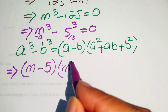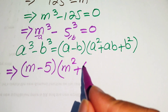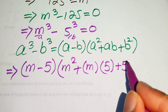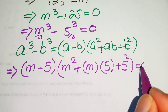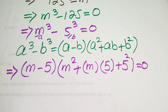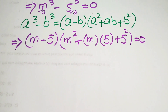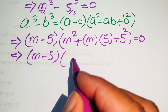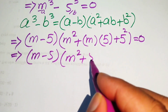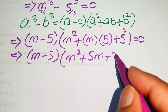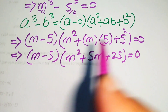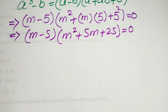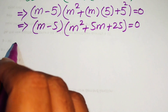Applying the formula gives (m minus 5) times (m squared plus ab, where a is m and b is 5, plus b squared, which is 5 squared) equals 0. After simplification this becomes (m minus 5)(m squared plus 5m plus 25) equals 0.